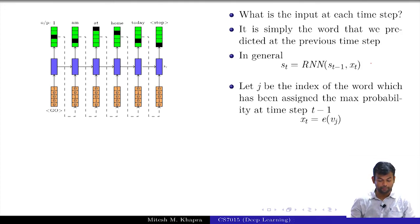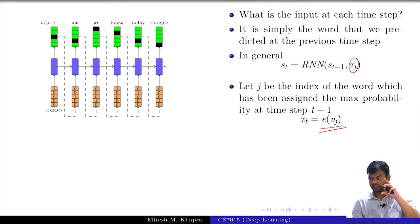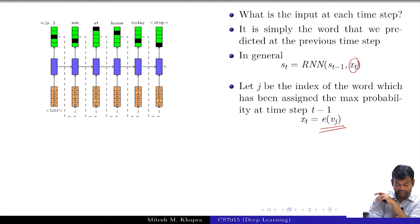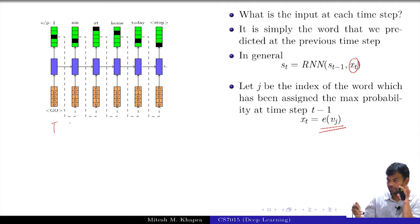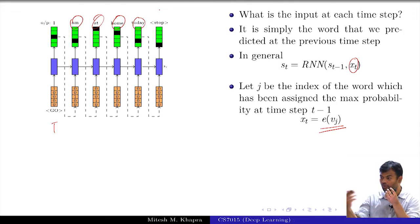The input at every time step is the word predicted at the previous time step, represented as a one-hot vector. At training time however you will have the real inputs — you know the true sentence, for example from Wikipedia — so you use the ground-truth word as input rather than the predicted one.